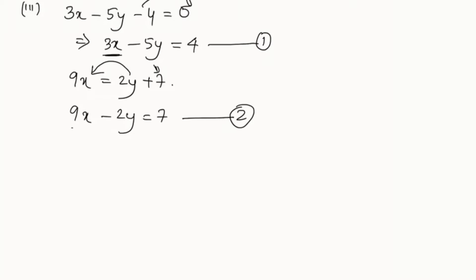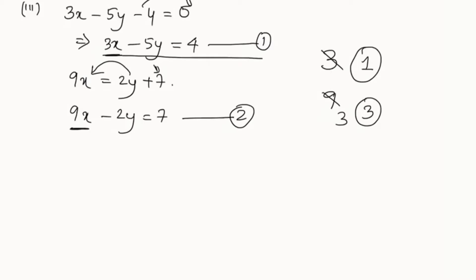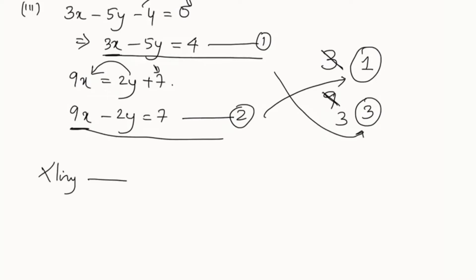For the elimination method, we look at the coefficients of x: here we have 3 and 9. We immediately recognize there are common factors between them — three 3s are 9 — so we simplify: this becomes 1 and this becomes 3. This makes things simpler. So we multiply equation 1 by 3 and equation 2 by 1.